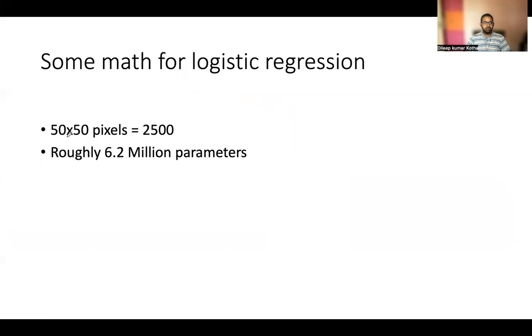Just if you take a small 50 by 50 picture, it will have 2500 features. And if you do big O of n squared, it will be 6.2 million parameters. And the 6.2 million parameters, if you start solving logistic regression, it will take a lot of time to solve. And in a reasonable amount of time, it's not possible to solve.